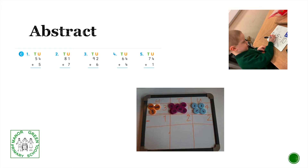Abstract is the symbolic stage. Children use symbols to model problems. This abstract stage involves the teacher introducing abstract concepts — for example, children are introduced to multiplication, division, addition and subtraction. Students do not progress to this stage until they have demonstrated that they have a solid understanding of the concrete and pictorial stages of the problem.